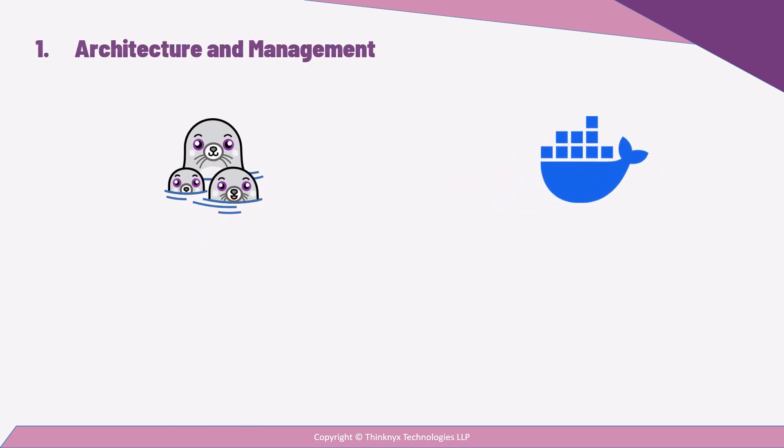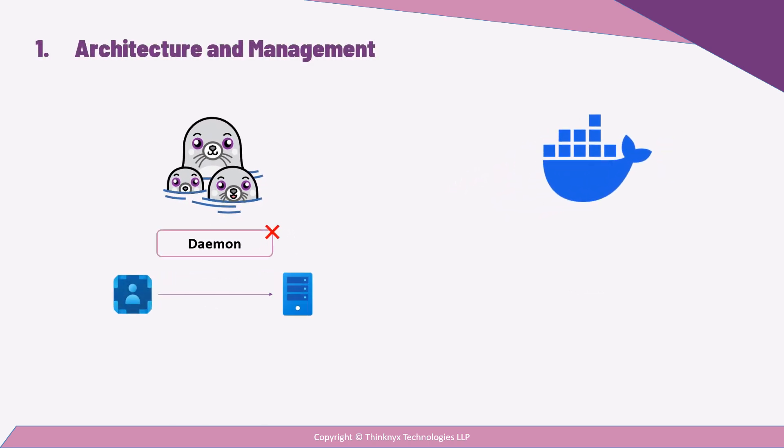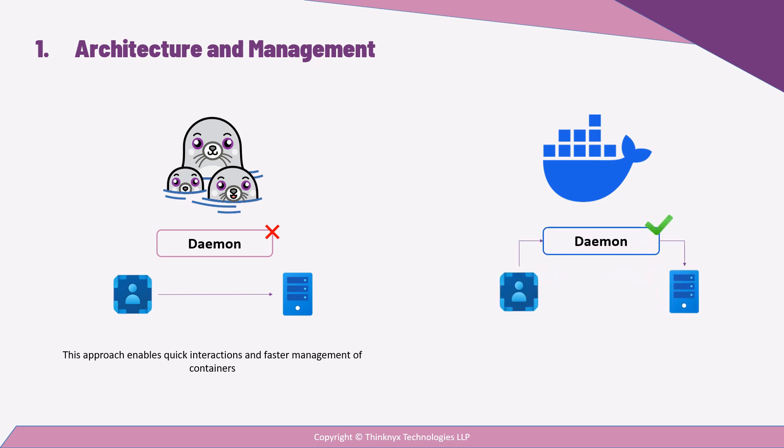Podman operates without a central daemon, meaning that each container runs as a direct child process of the command you issue. This direct approach allows for immediate interactions and faster container management. Conversely, Docker follows a client-server architecture relying on a daemon to manage containers, which can introduce some complexity as the daemon needs to be running to interact with your containers.